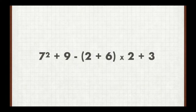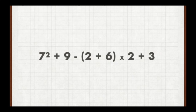7 squared is not 7 times 2 — it's 7 times 7, so that's 49. Now we have 49 plus 9 minus 8 times 2 plus 3. What are we going to focus on now? Not addition, not subtraction, but multiplication: 8 times 2 is 16. So we have 49 plus 9 minus 16 plus 3.